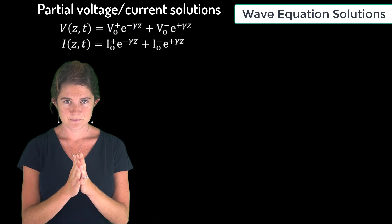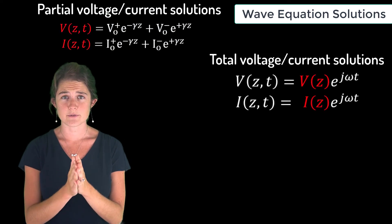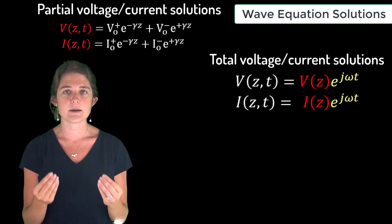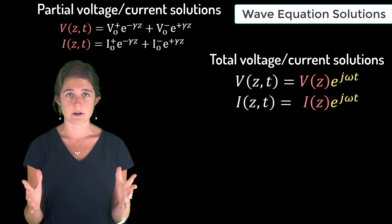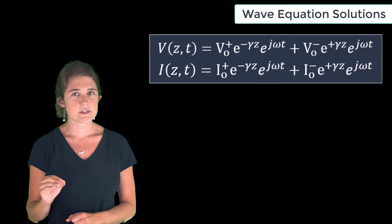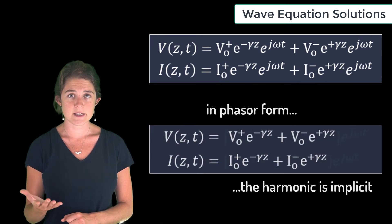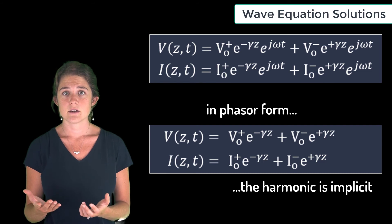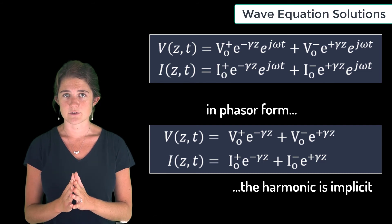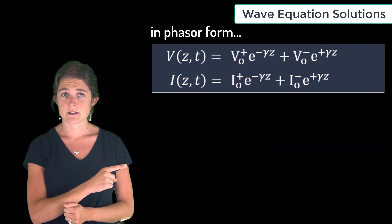Now remember, our total solution for the voltage and current waves involved a time-dependent term, so our whole solutions for voltage and current look like this. These equations are most commonly expressed in phasor form, which assumes the harmonic rather than explicitly stating it. So if a quantity is given in phasor form, it may look like this, but